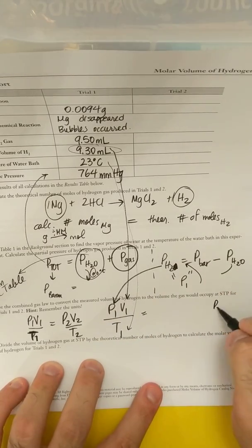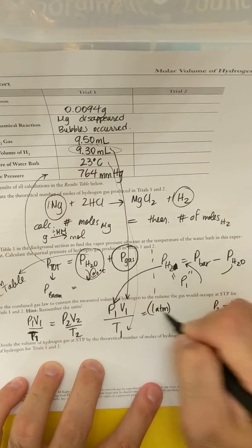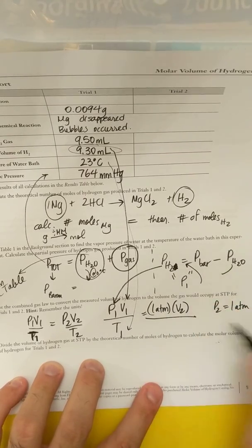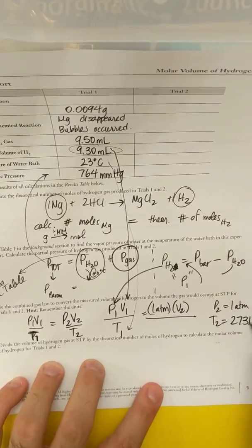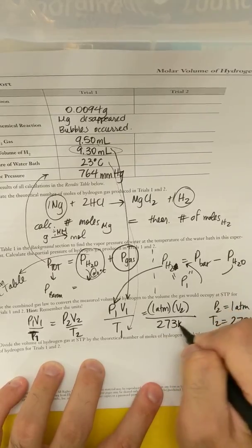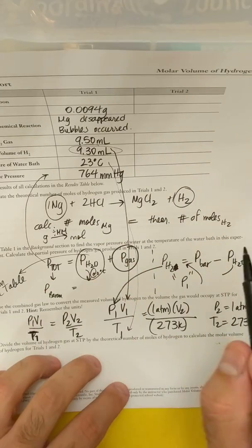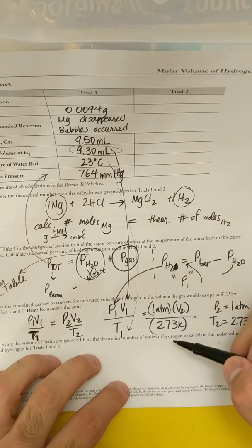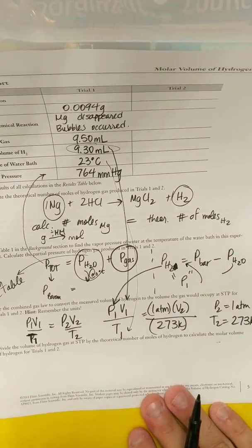V2 over T2 is equal to 273 Kelvin. So you know P1, V1, and T1. You collected this in the data. You have P2 and V2. Oh sorry, P2 and T2. You are solving for V2.